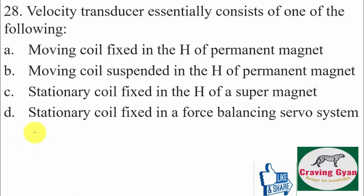Twenty-eighth question: a velocity transducer essentially consists of which of the following? Option A: moving coil fixed in the magnetic field of a permanent magnet — false. Option B: moving coil suspended in the magnetic field of a permanent magnet — true. Option C: stationary coil fixed in the magnetic field of a supermagnet — false. Option D: stationary coil fixed in the force of a balancing servo system — false. Hence option B is correct.